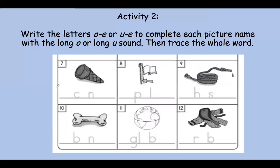Number seven. I know on your paper this is all one big sheet, but we just cut it in half. Now we're on to number seven. This is a cone — this is what you would put ice cream in. Can you say cone? Do you hear long O or long U? Cone. You got it — long O. Let's trace cone.